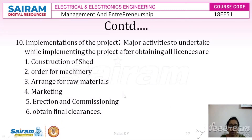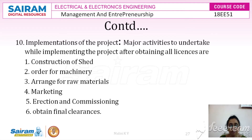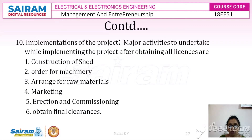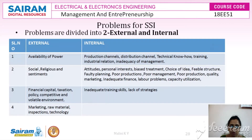After procuring the finance, the next stage is to implement the project. The major activities to implement the project after obtaining all licenses are: first, construction of shed; second, ordering machinery; third, arrangement for raw materials; fourth, marketing research and survey; and fifth, erection, construction, and commissioning. After completing all these stages, final clearance will be availed.